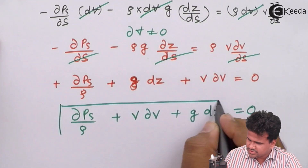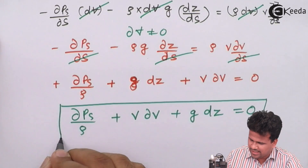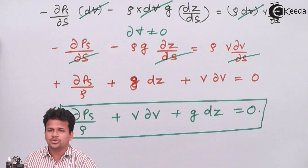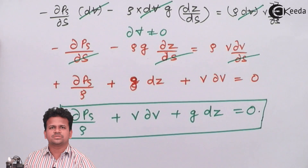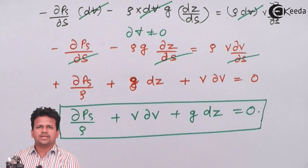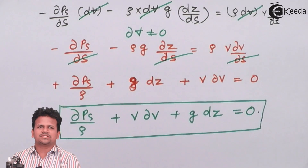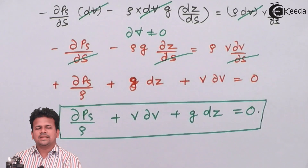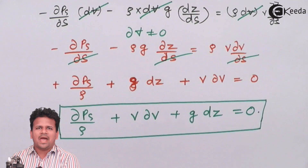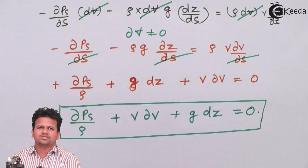This equation is called Euler's equation of motion. I hope you have understood Euler's equation of motion in terms of pressure, acceleration due to gravity, and acceleration of the fluid. Thank you.